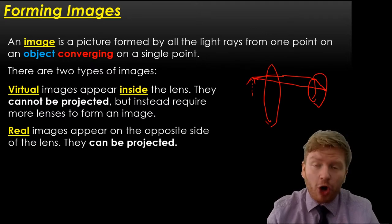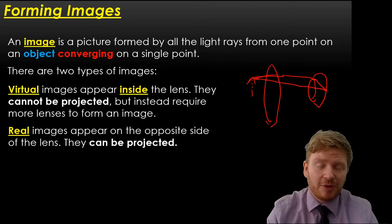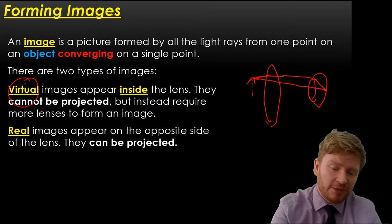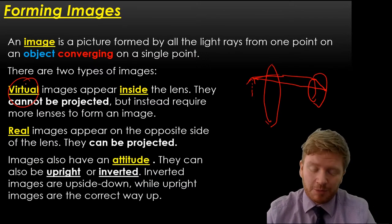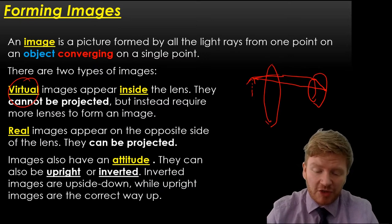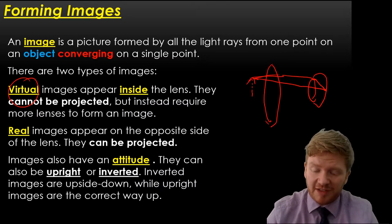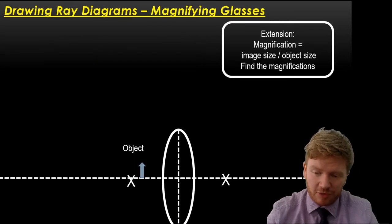But your eye over here, this is your eyeball, what happens is the light from there has to somehow end up forming a new image on the back of your eyeball. So it will all come to a single point inside your eye. Real images appear on the opposite side of the lens to the object, and they can be projected. And you also need to remember to talk about the attitude of an image. So whether they are upright or inverted. Inverted means they're upside down, upright means they're the correct way up.